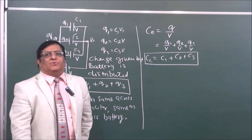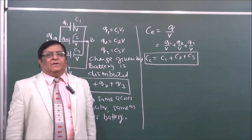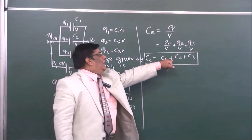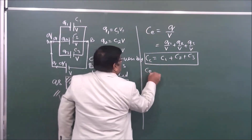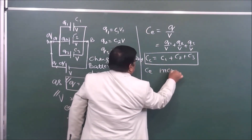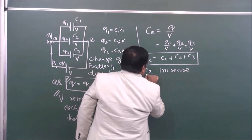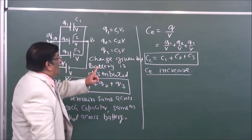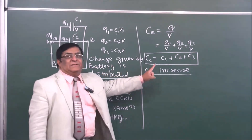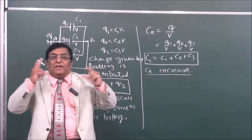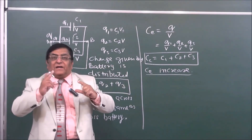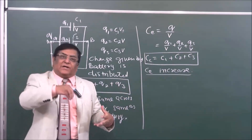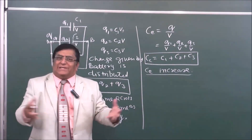What happens to capacitance in parallel combination — is it increasing or decreasing? It is very obvious that Ce increases. Always remember: Ce always increases in parallel combination. If capacitance increases, the charge contained will also increase.